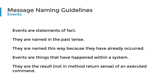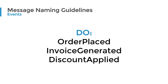Now let's move on to events. Events are things that have already happened within the system — that's why they are statements of fact. Because they have already occurred, you want to name them in the past tense. You use these events to let other parts of the system, or external consumers, know that something has happened. Generally, events are the result of a command being executed — something has changed state, and the event is the result of that command.